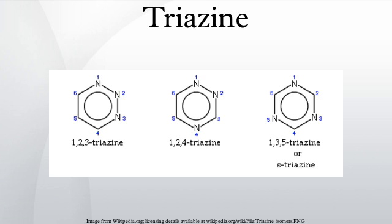The three isomers of triazine are distinguished by the positions of their nitrogen atoms, and are referred to as 1,2,3-triazine; 1,2,4-triazine; and 1,3,5-triazine.